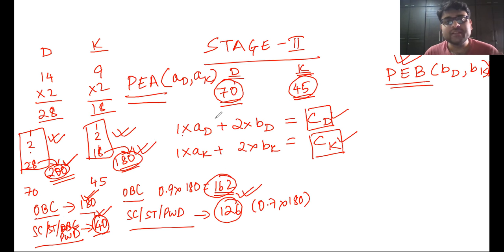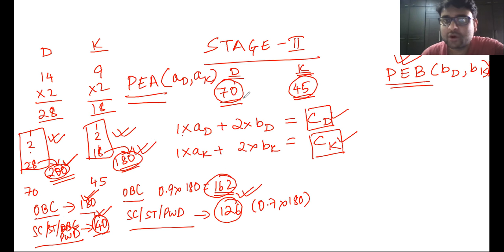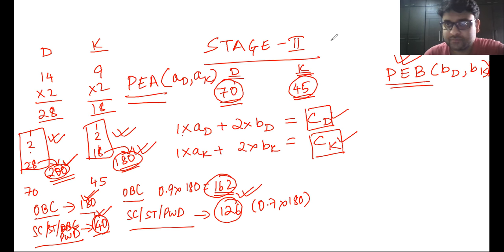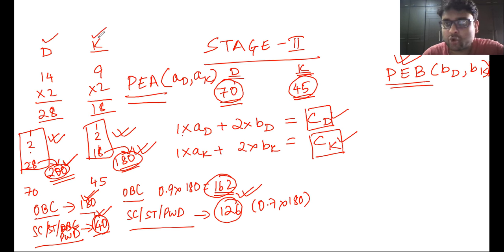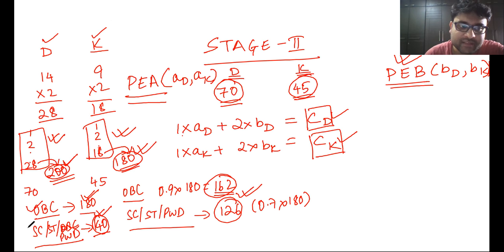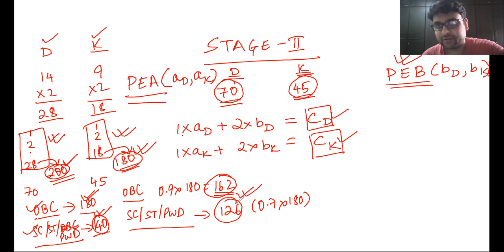This is stage 2. All these people who clear stage 2 will be called for stage 3, which is the interview. So 28 in the general category for Delhi and 18 in the general category for Kolkata will be called for the interview. Whoever in the OBC, SC/ST, and PWD categories are clearing these cutoffs will also be called for the interview.